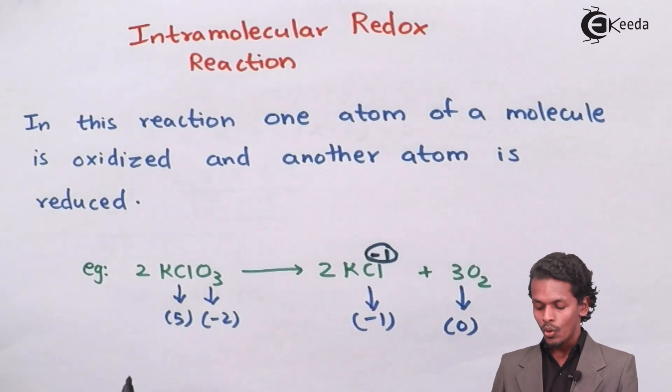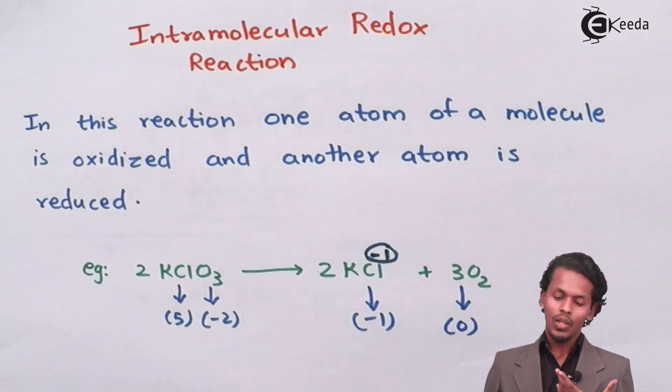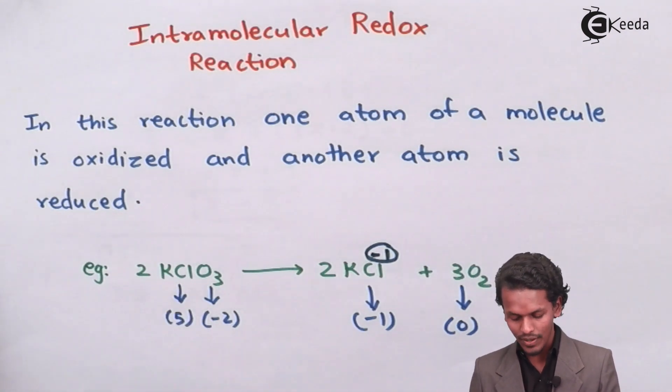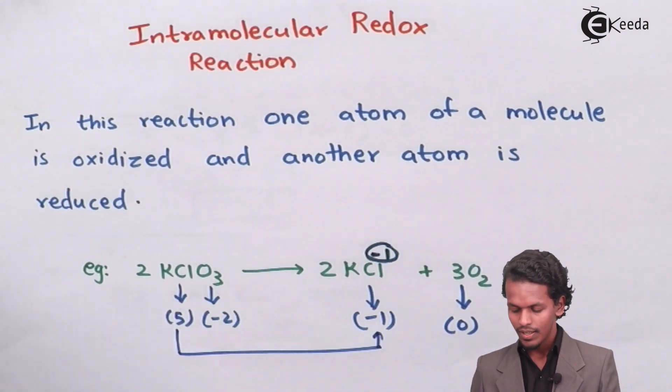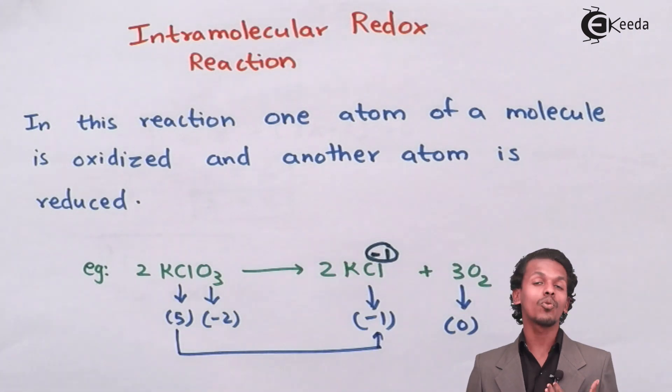As we can observe, within the molecule itself, one atom - if I talk about Cl - has been reduced from plus 5 to minus 1.